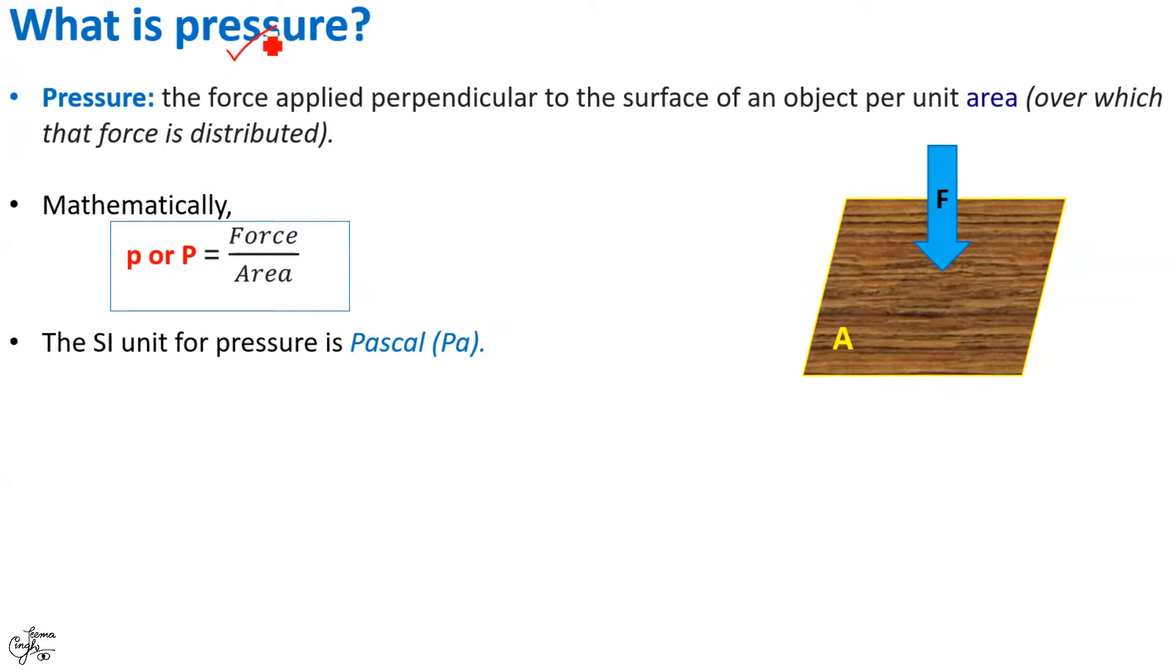Pressure is simply said as the physical force exerted on an object. We define pressure as the force applied perpendicular to the surface of an object. So, if this is an object, this force which is applied at 90 degrees to the surface of an object per unit area is said to be pressure. Mathematically, pressure is equal to force divided by area.